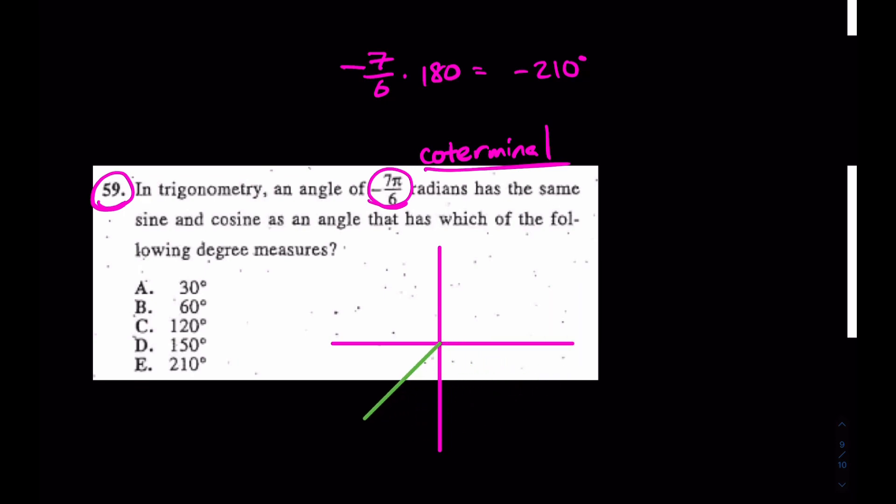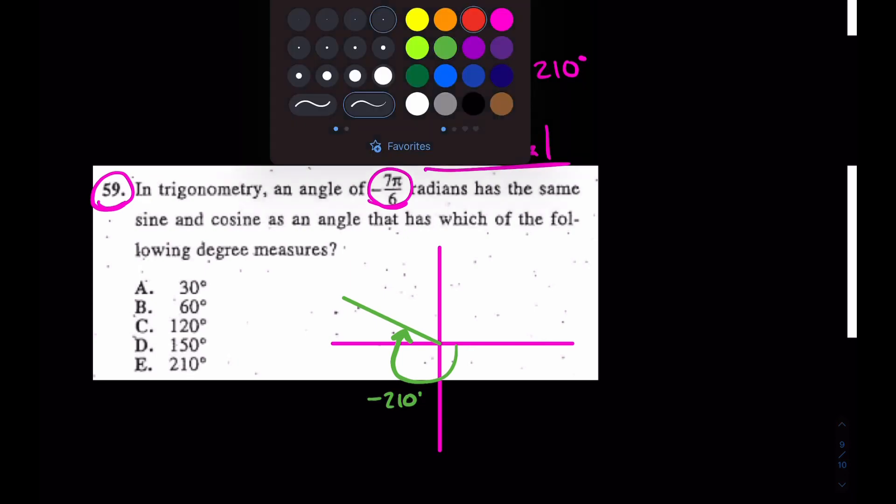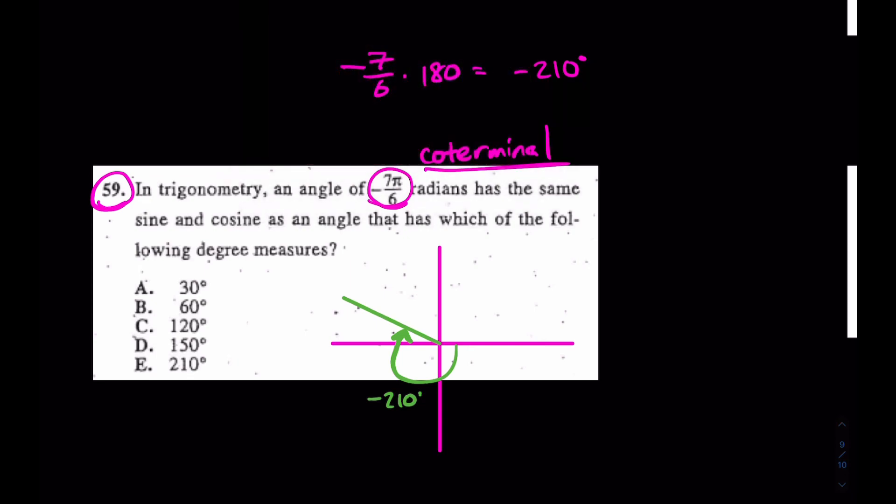Where is -210 degrees? Well, this is -180 degrees, so -210 is going to be something like this. So if that's -210 degrees, what's a coterminal angle that also gets you there?